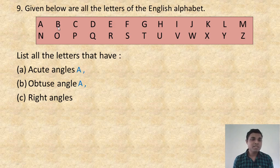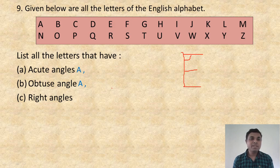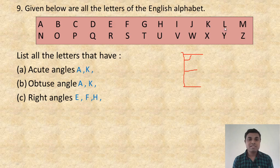E has a right angle — 90 degrees, so E goes under right angle. Similarly, F also has a right angle. G — no angle found. H — 90 degrees, so right angle. I — no angle. J — no angle. K — there is an acute angle and an obtuse angle. L — obviously a right angle. M — acute angle. N — acute angle. O — no angle. P — no angle. Q — no angle. R — no angle. S — no angle.